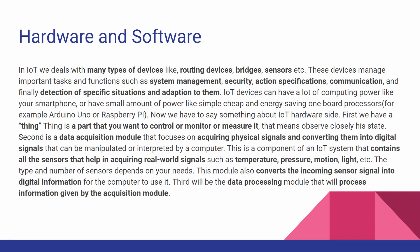In IoT we deal with many types of devices like routing devices, bridges, and sensors. These devices manage important tasks such as system management, security, action specifications, communication, and detection of specific situations and adaptation to them. IoT devices can range from high computing power like your smartphone to small low-power single-board processors like Arduino Uno or Raspberry Pi. On the hardware side, first we have the THING — the part that you want to control, monitor, or measure. Second is the data acquisition module, which focuses on acquiring physical signals and converting them into digital signals that can be manipulated or interpreted by a computer.